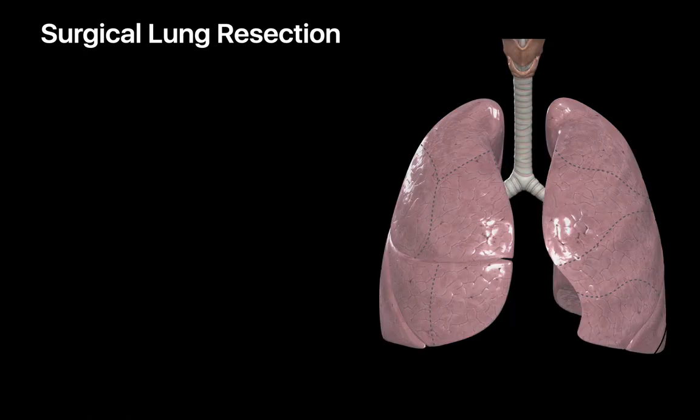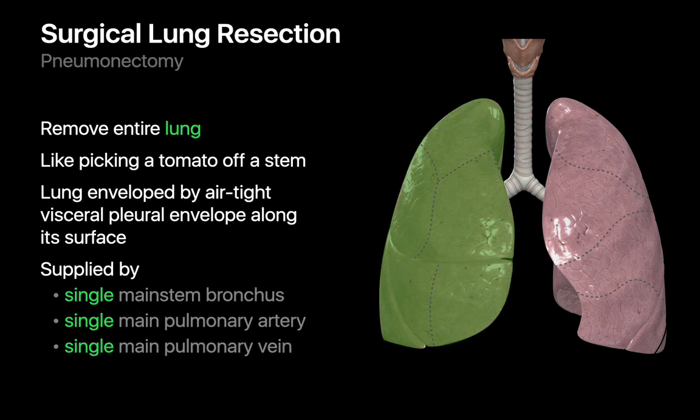There are a couple of different types of lung cancer resection surgery. In a pneumonectomy, the entire lung is removed. Resecting an entire lung is sort of like plucking a tomato off a stem. A lung is encased by an airtight membrane called the visceral pleura and attached to the rest of the body by a single airway, a single pulmonary artery, and only two or three pulmonary veins.